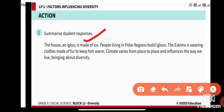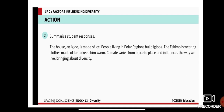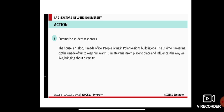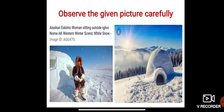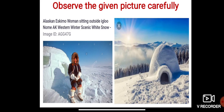People living in polar regions build igloos. The Eskimo is wearing clothes made of fur to keep warm. Climate varies from place to place and influences the way we live, bringing about diversity. The Eskimo's life is different from ours since they live in a very cold polar region — their houses are made of ice and they wear warm fur clothes.